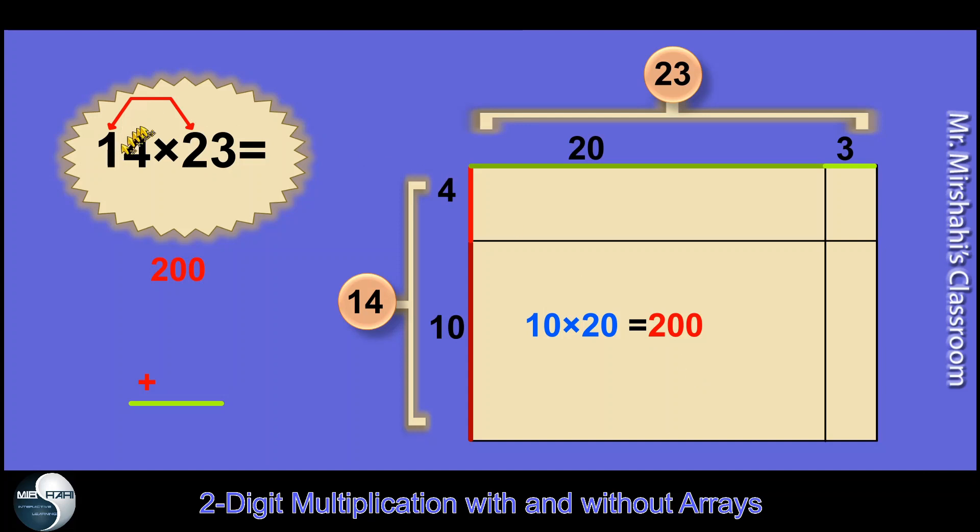Next rectangle, I get 4 here and 20 there. 4 times 20 is 80. And the next rectangle is here. I get 10. Remember this is 10, and I'm going to show you. This is 10. And here we have 3. See that? That's 3. 10 times 3 or 3 times 10 is 30. And my last rectangle, I have 3 times 4. You can see this is 4 and that's 3. And that's the answer 12.